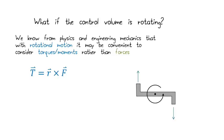So that brings us to our topic, which is, what do we do if the control volume is rotating? We know sometimes from our physics classes and other engineering mechanics classes, that when we deal with rotational motion, usually it's easier to deal with torques or moments rather than linear forces. So if I look here, pretend I'm looking down at the top of a sprinkler head that rotates, I could look at a torque on that, which is equal to the radius crossed with the force.